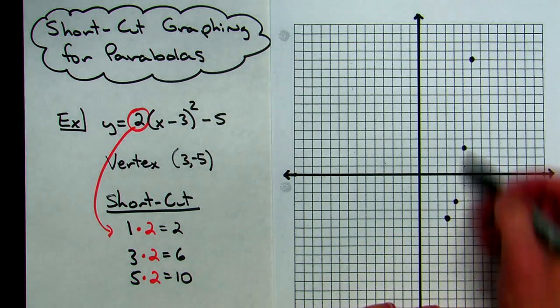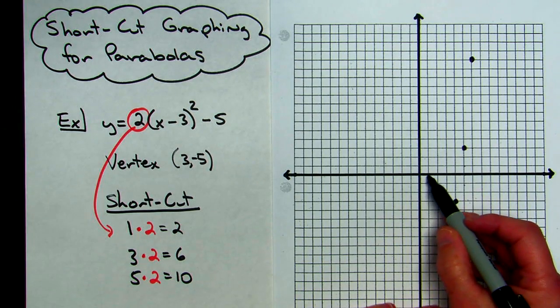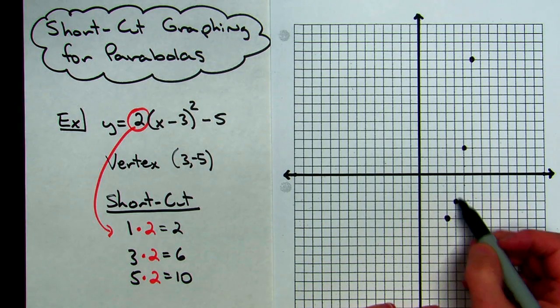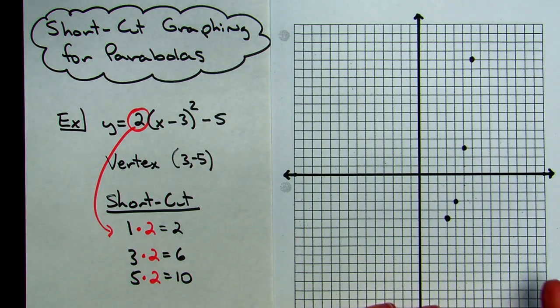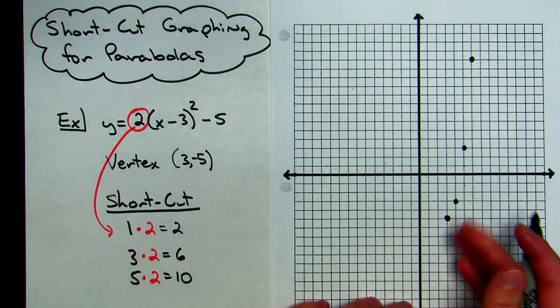If I were to actually plot those points, if I would plug in 4, I would get a negative 3. This shortcut avoids having to create that x, y table.